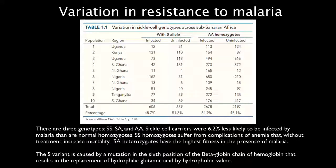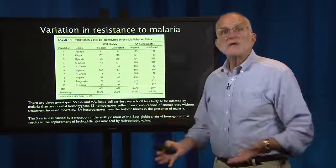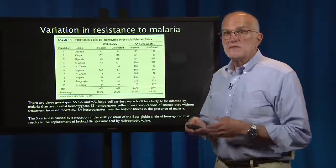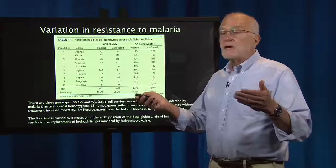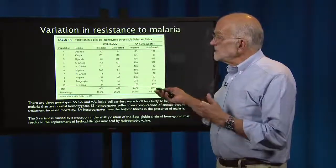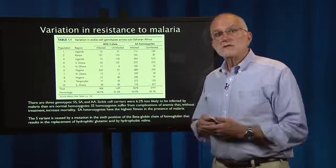In this case, we have a lot of information on the biochemical basis. The S variant is caused by a mutation in the sixth position of the beta globin chain of hemoglobin, resulting in the replacement of hydrophilic glutamic acid by hydrophobic valine. So here is a case where we can go right from the molecular level up to the population level to understand why genetic variation is being maintained. We can also see that disease is playing an important role in selection on humans.